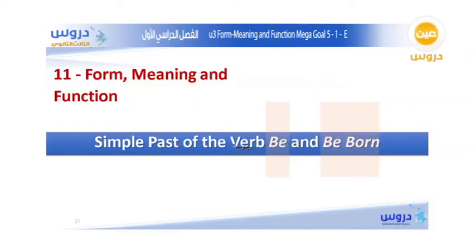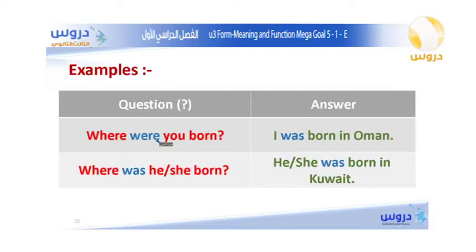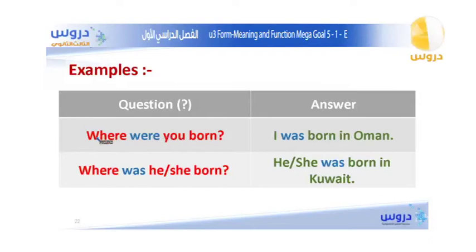Now we're going to talk about the simple past of the verb to be and also 'be born.' Here we have an example of how to make an information question with the simple past of the verb to be. For example: Where were you born? Here 'were' is the past form of the verb to be. The answer is: I was born in Oman.